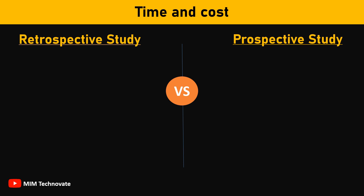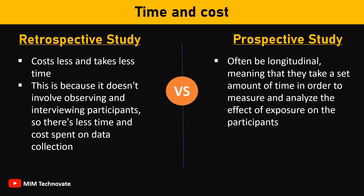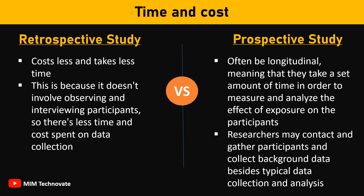Time and cost: A retrospective study costs less and takes less time than a prospective study, because it doesn't involve observing and interviewing participants. Data is readily available for collection and analysis, requiring a smaller research team and fewer resources. Prospective studies, on the other hand, can often be longitudinal, taking a set amount of time to measure and analyze the effect of exposure on participants, with researchers also contacting and gathering participants and collecting background data.